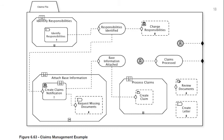In the attach base information stage, 'create claims notification' is mandatory, and there's a discretionary process task 'request missing documents' (repeatable with a hashtag). When 'create claims notification' finishes, it links to the 'base information attached' milestone sentry, which links to 'create claim' — a discretionary case task in the process claim stage. There are also two user events: one linked to an exit sentry to terminate the claims file, and one triggering the milestone 'claims processed,' also leading to the exit sentry. Two additional discretionary items — 'review documents' (manual, repeatable) and 'create letter' (process task, repeatable) — complete the model.